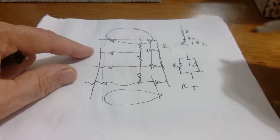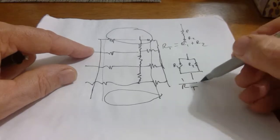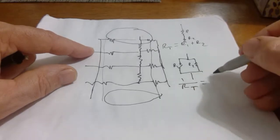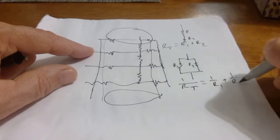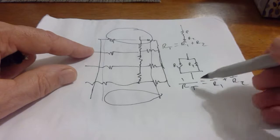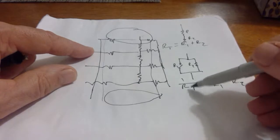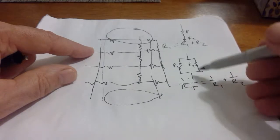R total is really 1 over R total, and then it's 1 over R1 plus 1 over R2. And then you can calculate R total. You can take the inverse and then you'll have RT.